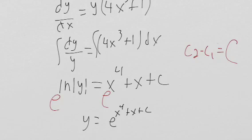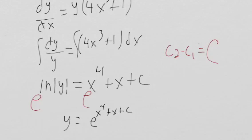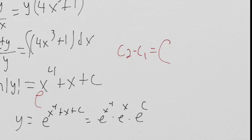So now one thing to recognize, this is a part that people really miss. We have e to the x to the 4th plus x plus c. This can technically be rewritten as e to the x to the 4th times e to the x times e to the c from exponent rules. We saw this in another video that you watched. If you have x to the 4th times x squared, that's equal to x to the 4 plus 2, which is x to the 6th. So we can take it from this form and put it in this form.